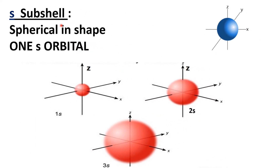S sub-shell is spherical in shape — just like a ball. S sub-shell contains only one S orbital because it is equally distributed along the x-axis, y-axis, and z-axis. One S orbital is present in the K shell, two S orbital in the L shell, and three S orbital in the M shell. All S orbitals can hold a maximum of two electrons. One S orbital is smaller in size than the two S orbital, and two S orbital is smaller than the three S orbital.